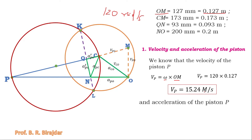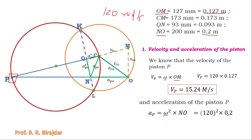Similarly, the acceleration of piston P equals omega squared multiplied by the O to N distance. In the acceleration diagram, ON represents the acceleration of P with respect to O. ON is 0.2 meter, so acceleration of P equals 120² × 0.2 = 2880 meter per second squared. This completes the first part: velocity and acceleration of the piston.